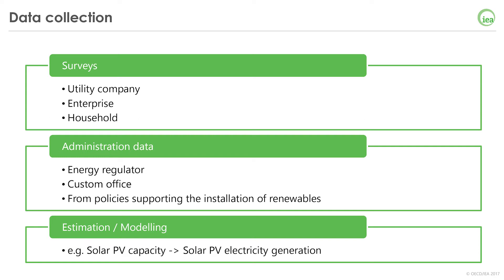Here I want to go through each data collection method with simple examples. The first is survey — countries can collect data directly from energy suppliers or end users. For example, a National Energy Ministry or Statistics Office can oblige electricity suppliers to fill a questionnaire with information on how much electricity they generated or supplied. Through surveys, countries can get relatively accurate data, but it can sometimes cost too much. In that case, administrative data can be the second option — for example, if an energy regulator has a feed-in tariff scheme on wind, electricity production from wind is collected by the regulator. Lastly, if no data is available, data should be estimated. For example, if a country has solar PV capacity data but no electricity production figure, they can estimate production from available capacity data.